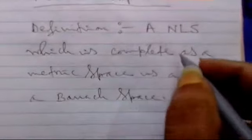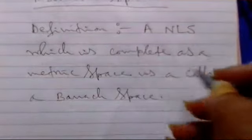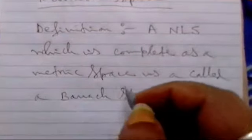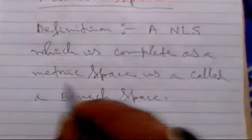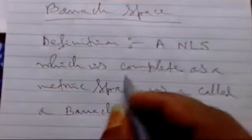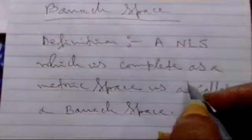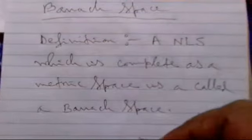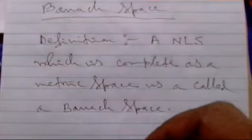That means, 'complete' means: if we are taking a sequence in this non-linear space and it satisfies the Cauchy property in metric spaces, and we find it is complete — that is, the Cauchy sequence is convergent — then it is called complete. And we are considering some metric spaces taken in this manner.